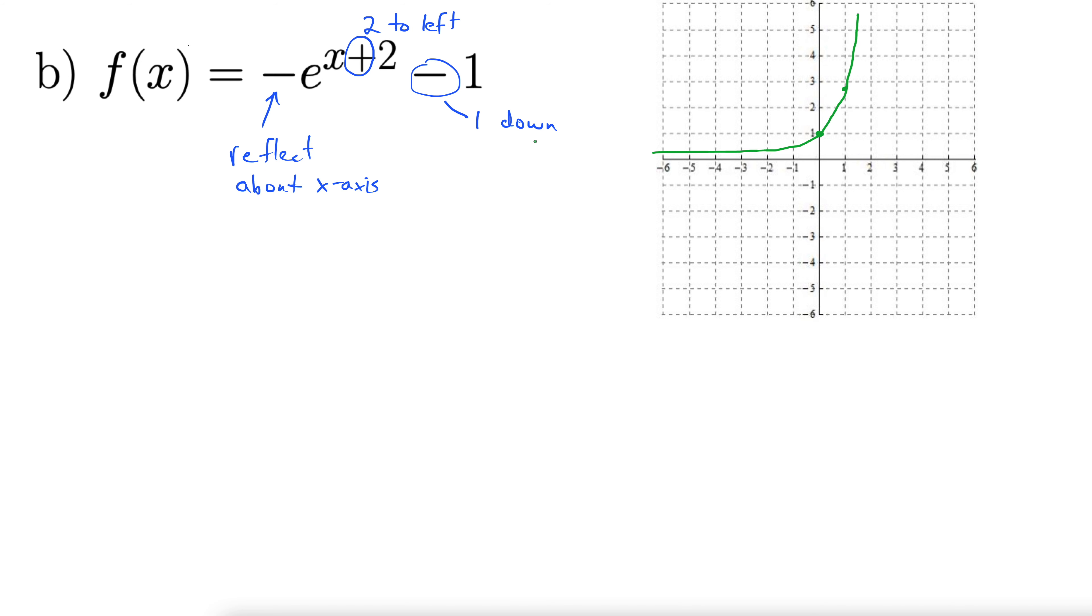So we're going to take this green graph. We're going to reflect it about the x-axis. So let's do that. I'm going to reflect it down, so that brings this point down to 0, negative 1, and then our 1, e becomes 1, negative e. Again, that's about 2.7, so now I'm working with this plot here. And that's my new plot, so I'm just going to erase the old one. So what we have now is negative e to the x.